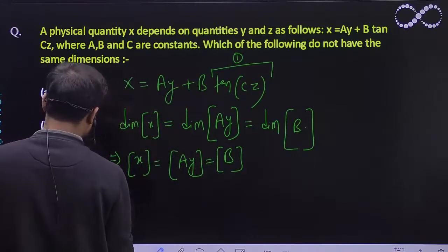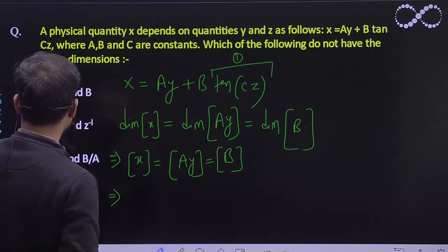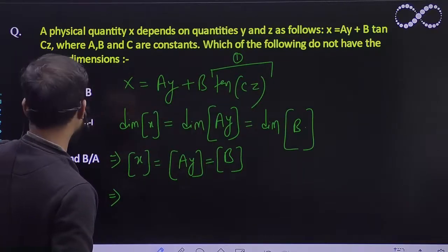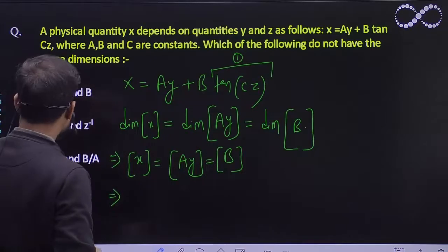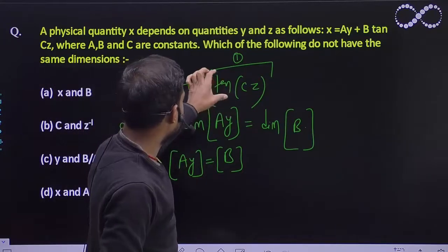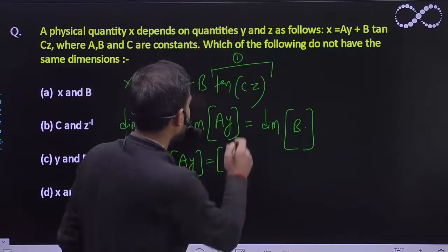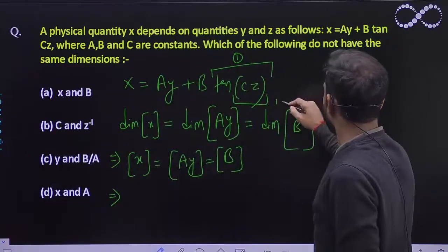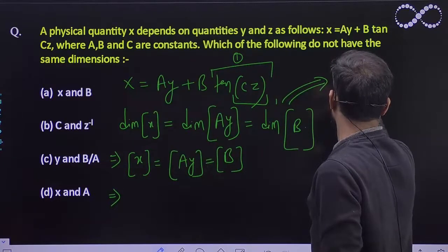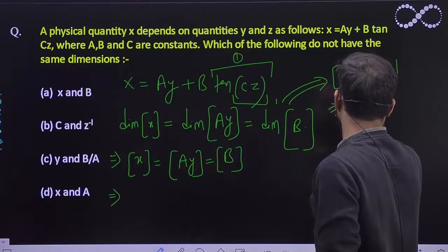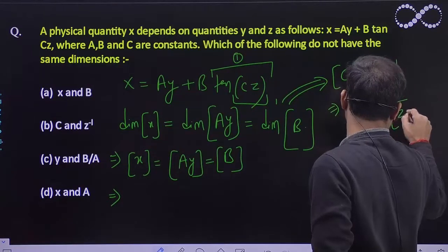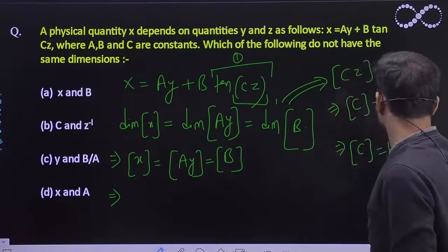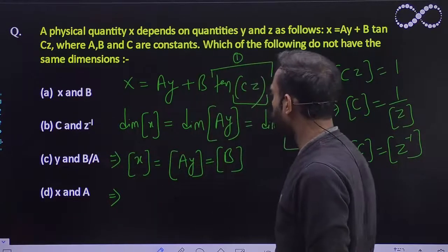So x and b have the same dimension — that cannot be the answer. Now checking c and z-inverse: the trigonometric ratio tan(cz) has dimension 1, so the argument cz must also have dimension 1. From this, the dimension of c must equal 1 over dimension of z, which means dimension of c equals dimension of z-inverse. So c and z-inverse also have the same dimension — that cannot be the answer either.